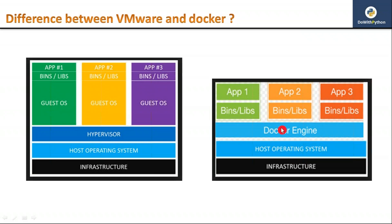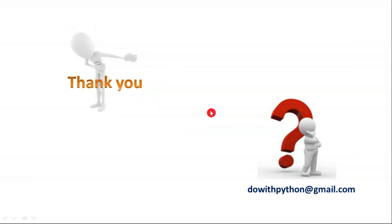Now comparing VMware and Docker architectures — in VMware you are deploying different guest operating systems, but with Docker you don't need to deploy different operating systems. Docker itself creates that virtual environment. Basically Docker is a lightweight operating system — it is a Linux kernel. So that is a simple introduction about Docker.